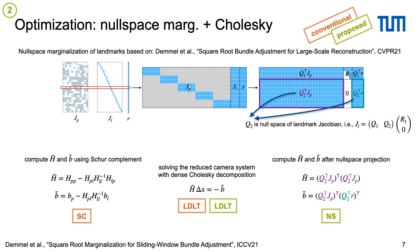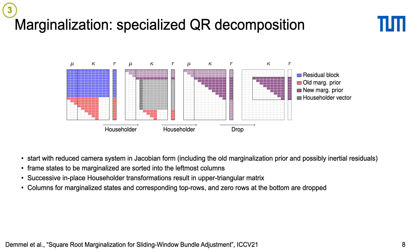Computing the reduced camera system from the null space projected frame Jacobians is faster than a Schur complement, as we can do dense linear algebra operations on larger memory blocks. For permanent marginalization, we start with the reduced camera system in Jacobian form, including the old marginalization prior and possibly inertial residuals. Here, the frame states to be marginalized are sorted to the left and successive Householder reflections result in an upper triangular matrix.